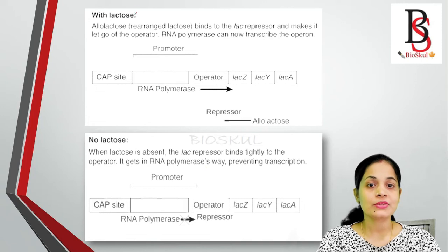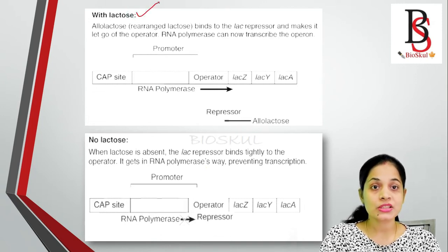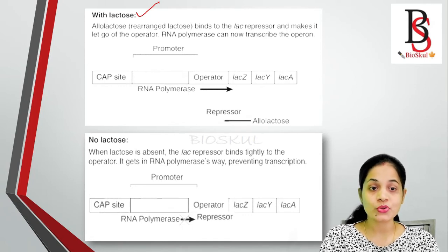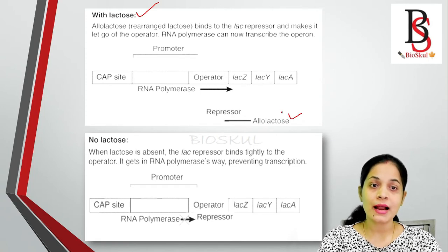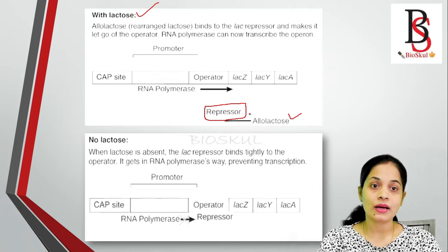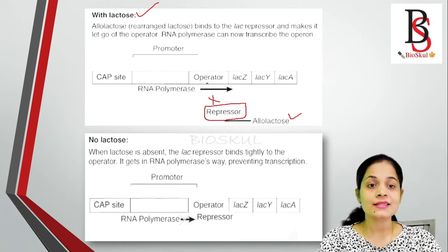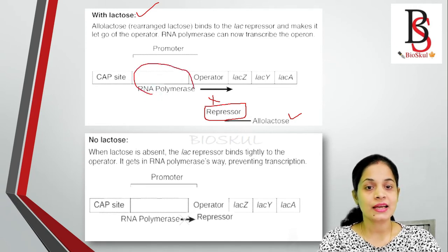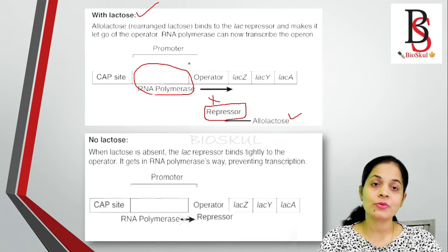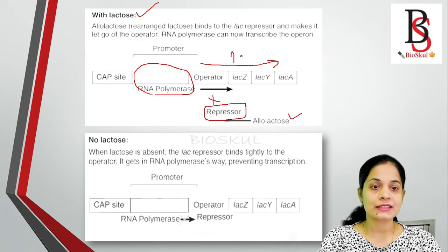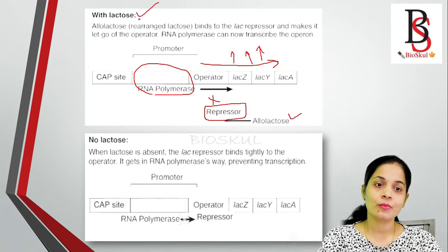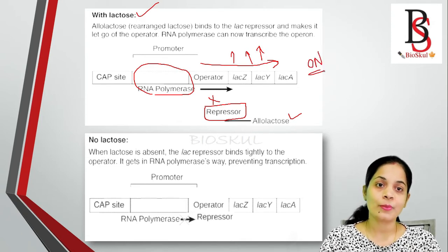When lactose is present in the media, beta-galactosidase converts it into allolactose. This allolactose acts as the inducer and binds to the repressor molecule. When allolactose binds to the repressor, the repressor can no longer bind to the operator region. RNA polymerase can then bind to the promoter region, allowing transcription of lac Z, lac Y, and lac A genes and production of the corresponding proteins. So when lactose is present, the lac operon turns on.